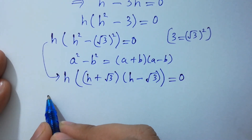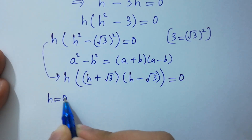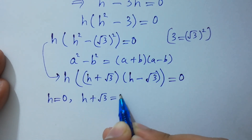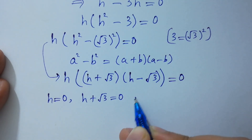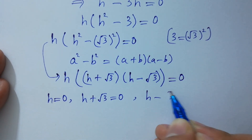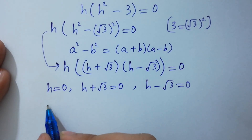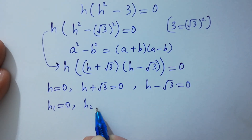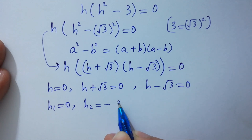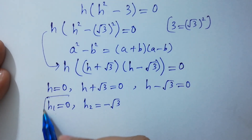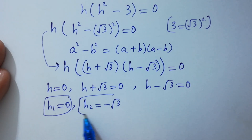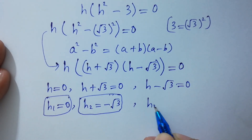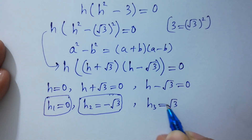Setting each factor to zero: h equal to 0; h plus √3 equal to 0; h minus √3 equal to 0. So h₁ is 0, h₂ equals minus √3, and h₃ equals plus √3. These are the three values of h.